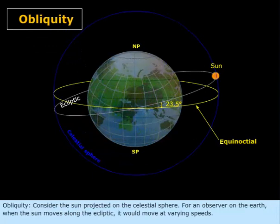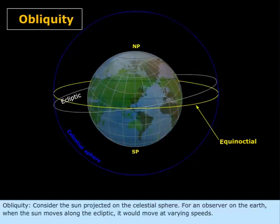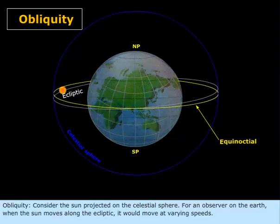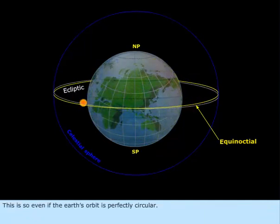Obliquity. Consider the Sun projected on the celestial sphere. For an observer on the Earth, when the Sun moves along the ecliptic, it would move at varying speeds. This is so even if the Earth's orbit is perfectly circular.